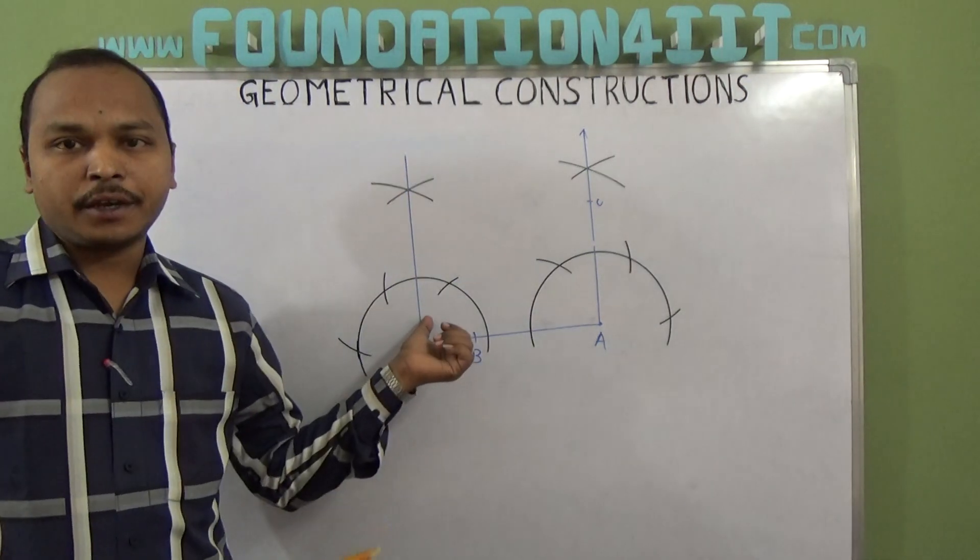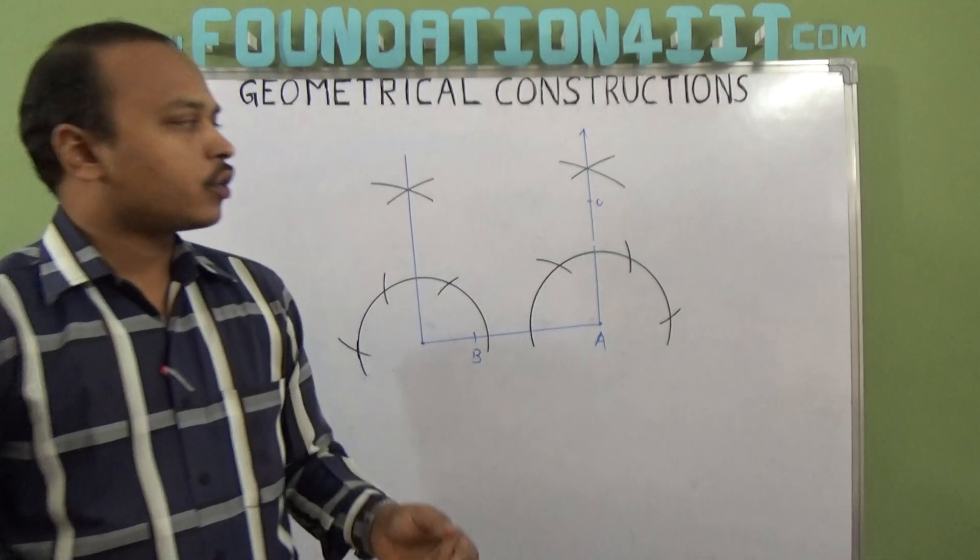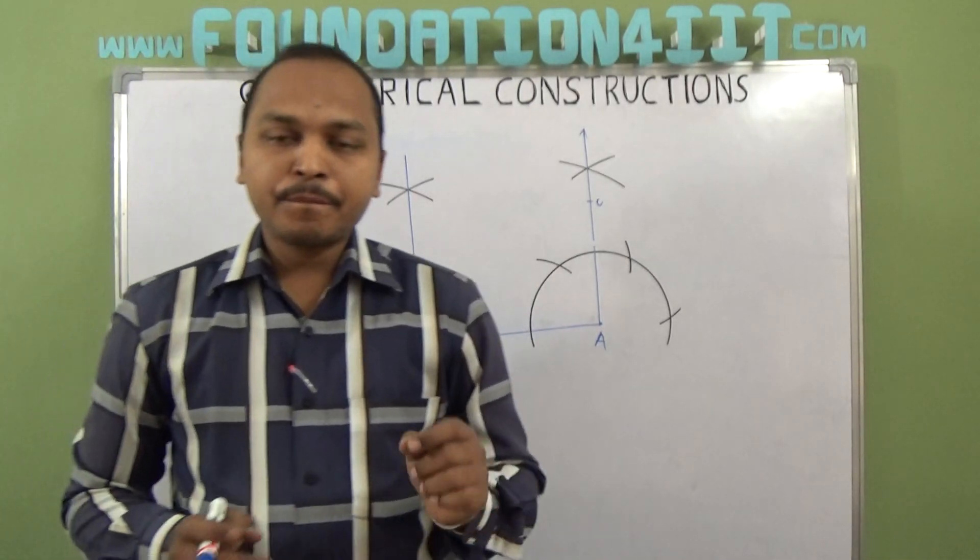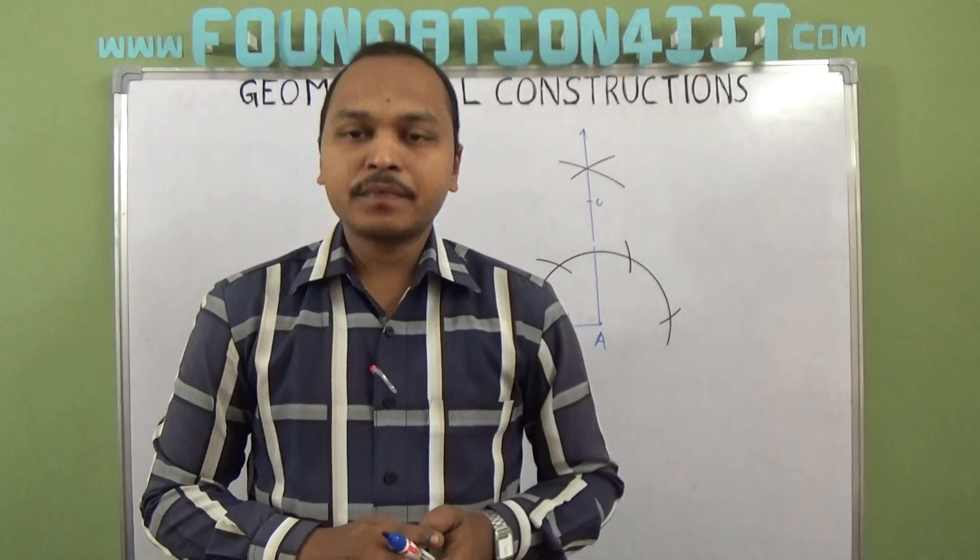So this is the angle 90. You can use any side, anywhere. Not only this, any line segment is given, at any point you can construct 90 degrees using compass.